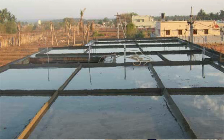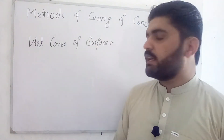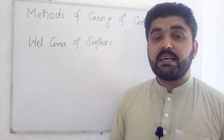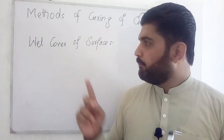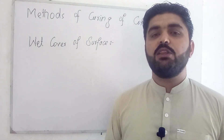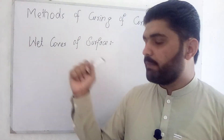The third method is the wet cover method. In this method, we cover the concrete surface with wet jute or hessian bags so that heat loss from the concrete is minimized. As you can see in the picture, the column surfaces are covered with wet bags. This is the third method of curing of concrete.